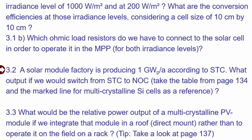The second part of the exercise was that you have a solar factory producing one gigawatt under standard test conditions per year. If you would switch from the standard test conditions to the nominal operating conditions, how would the output change? The last part asks what would be the relative power output of a multi-crystalline PV module if we integrate that module into a roof and the temperature increases. We look at the table on page 137 and determine the power loss and the yield loss.